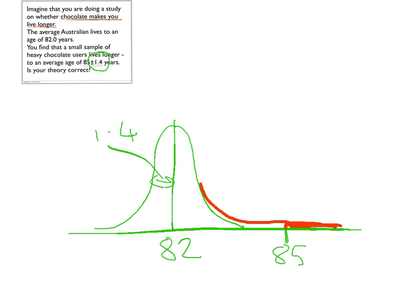So I drew it going to 0, but in fact it won't quite go to 0, so it probably looks more like that realistically. So that area over here is the probability that you'd see a value of 85 or larger.